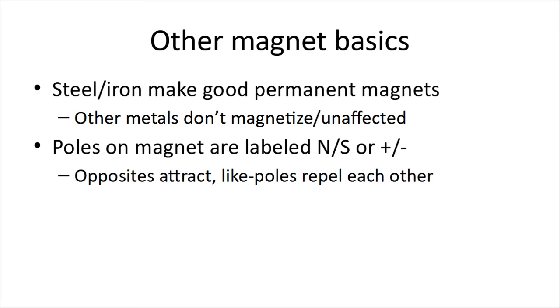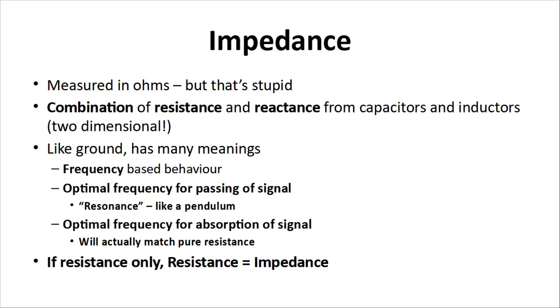Now, some other basics about magnets. Steel and iron make good permanent magnets. Other metals tend not to magnetize or are unaffected. And the poles on the magnet are labeled north-south or plus-minus. And opposites attract, like poles repel each other. Any kid who's played with a couple of magnets knows this.